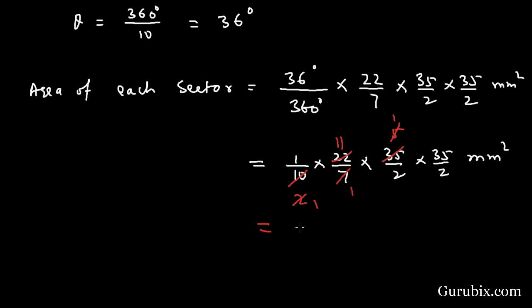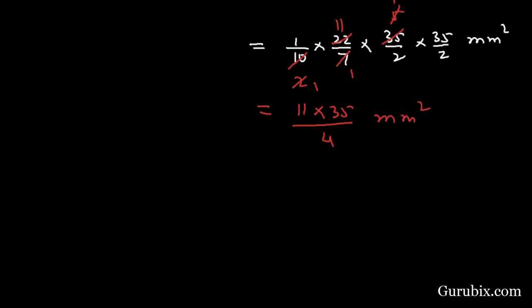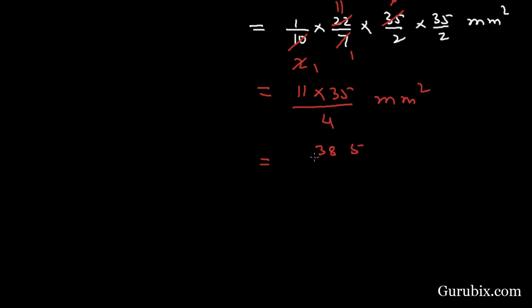Then we have 11 times 35 over 4 millimeter square, and this equals 385 over 4 millimeter square.